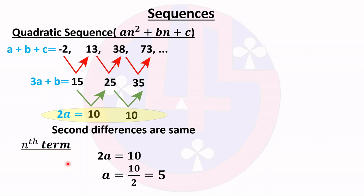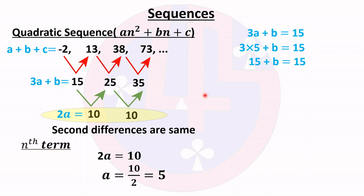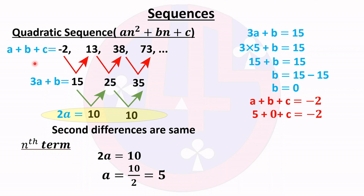Next, 3a + b = 15: substituting a = 5 gives 3 × 5 + b = 15, so 15 + b = 15, meaning b = 0. Then substituting a and b into a + b + c = −2: 5 + 0 + c = −2, so c = −2 − 5 = −7.